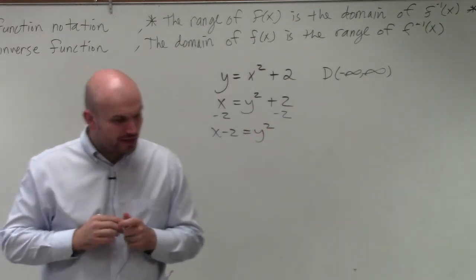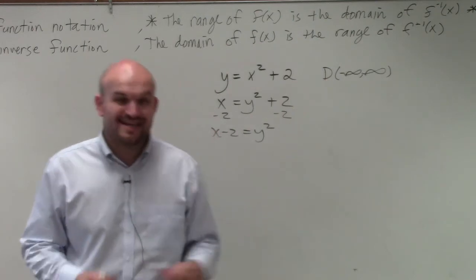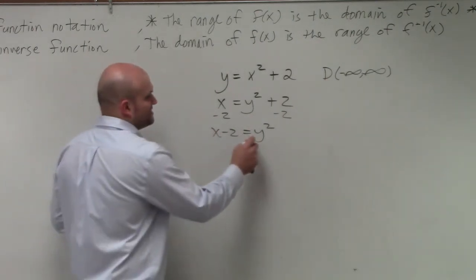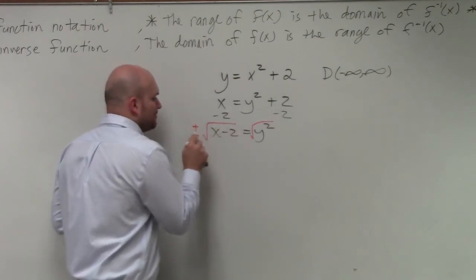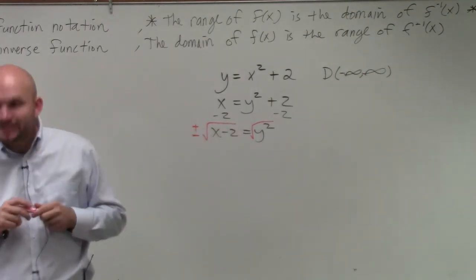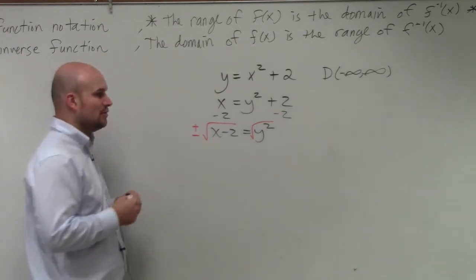To undo squaring, I will introduce the square root. Notice how I'm saying introduce the square root, because whenever I say introduce the square root, you should always think plus or minus. Whenever you introduce the square root, we have to make sure we're including plus or minus.